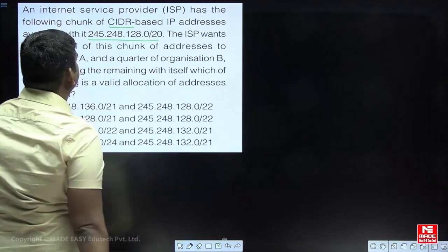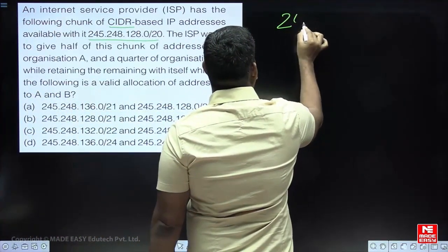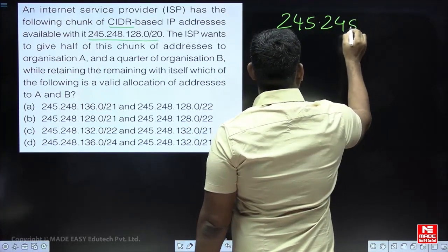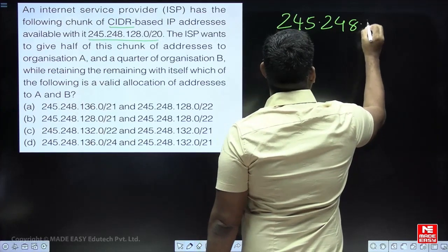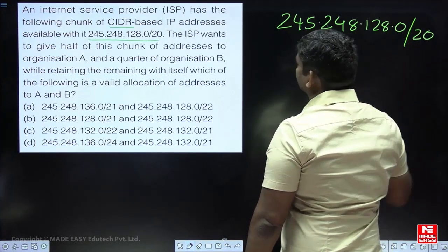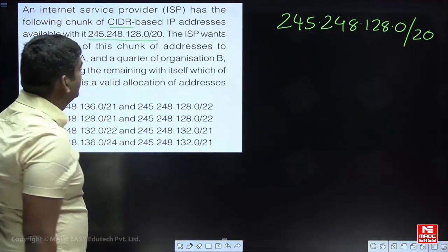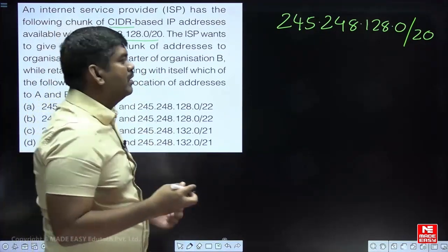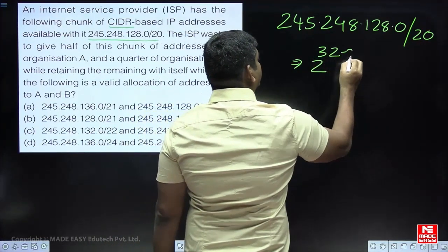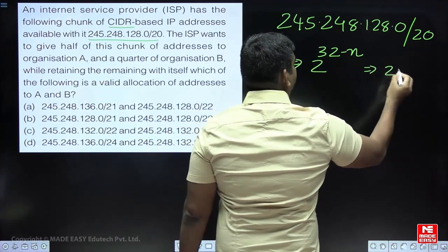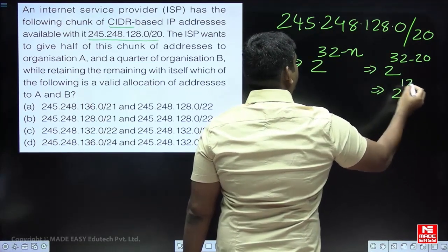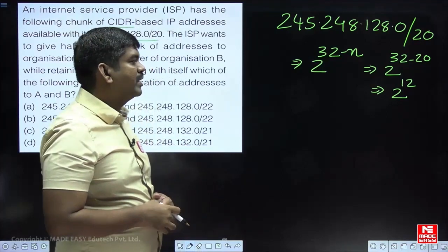The address given in the problem is 245.248.128.0/20. The number of addresses in classless addressing is given by 2 power (32 minus prefix), which is 2 power (32 minus 20) = 2 power 12. So total addresses are 2 power 12.